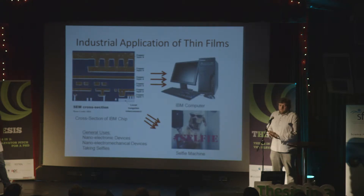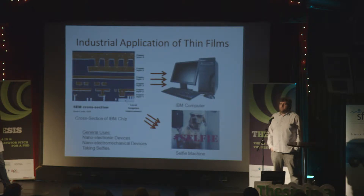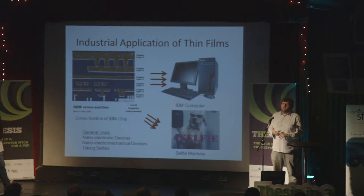Why copper? Copper replaced aluminium in the Damascene process in the mid-90s for a number of reasons. In particular, copper is cheap, it's very abundant, and it's got excellent electrical and thermometric properties.